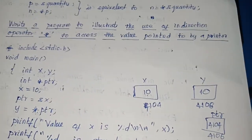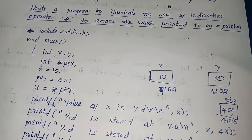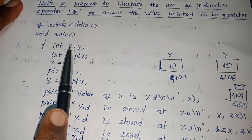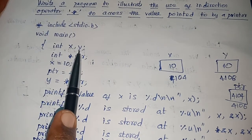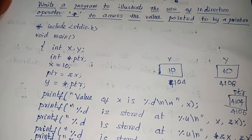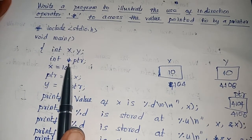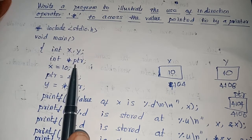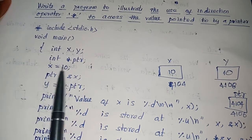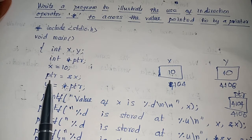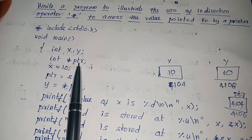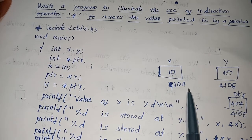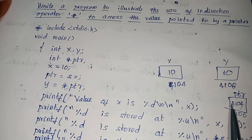Let us see an example to access the value of a variable using the pointer variable. In this program we have declared x and y as integer variables, and ptr as a pointer variable of data type int, so it can collect only the address of an integer variable. We are assigning x = 10, then ptr = &x, so this pointer variable collects the address of x. Suppose the address of x is 4104 — that address will be stored in ptr.